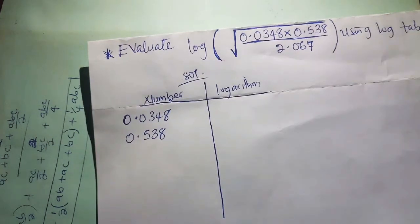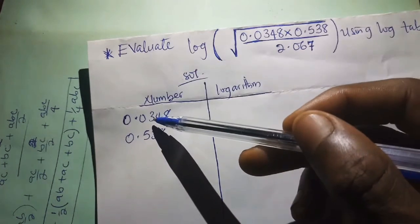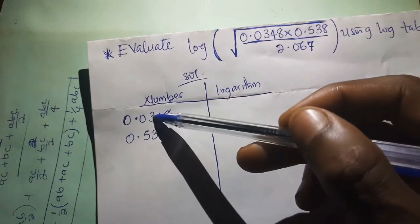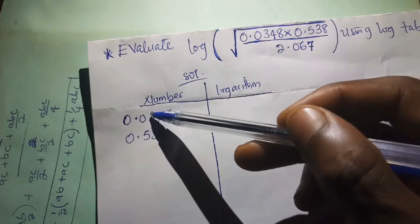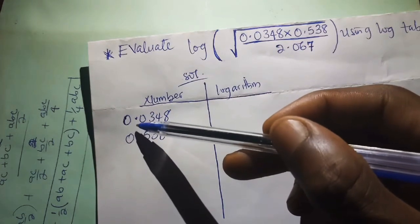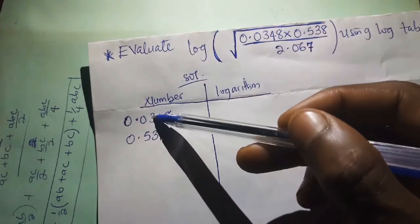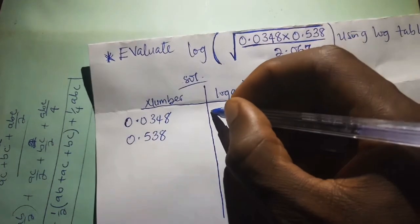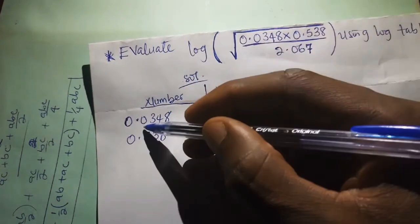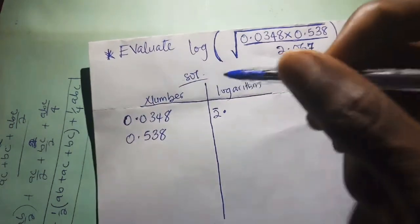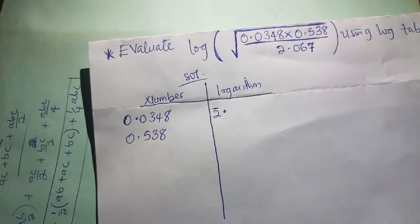After changing the number to standard form, the standard form of 0.0348 requires bringing the decimal point to the first significant figure, giving 3.48. If you count the number of times you move the decimal point, it is one, two — so you write the characteristic as negative two. The mantissa is always obtained from the log table.